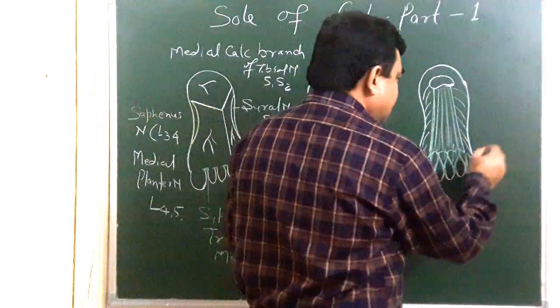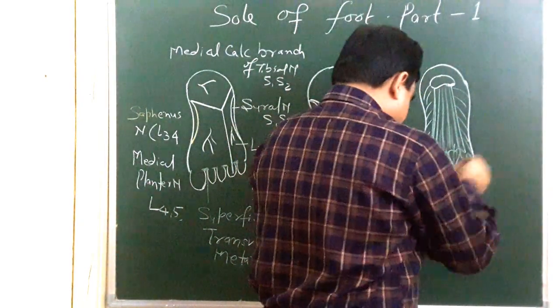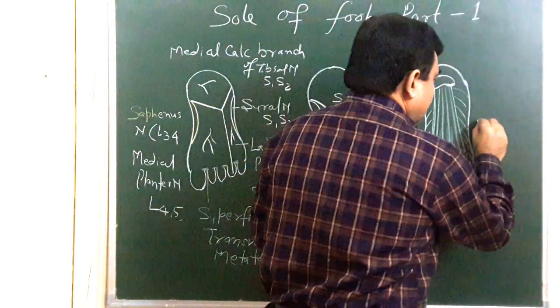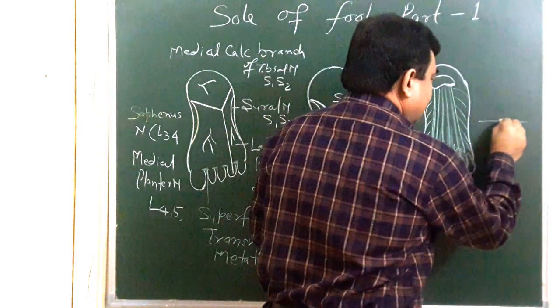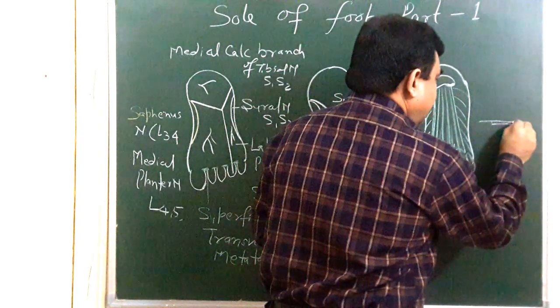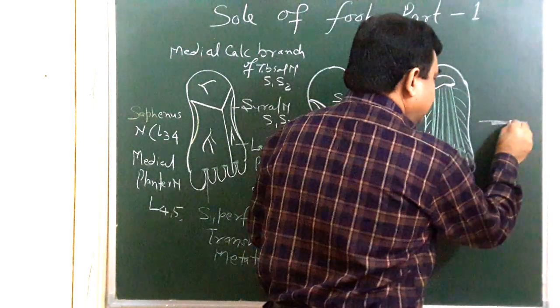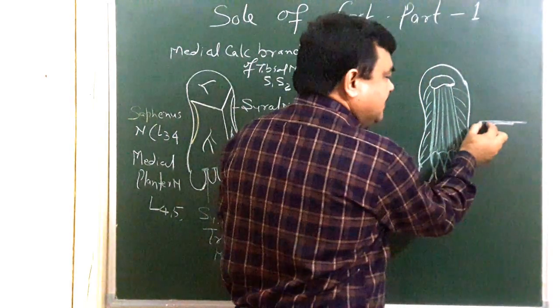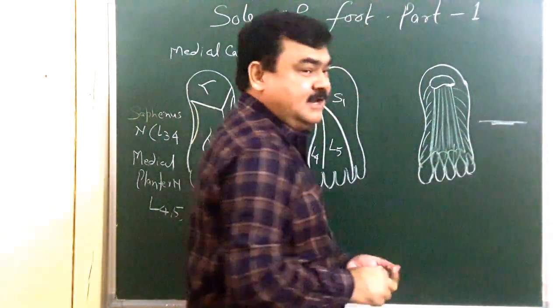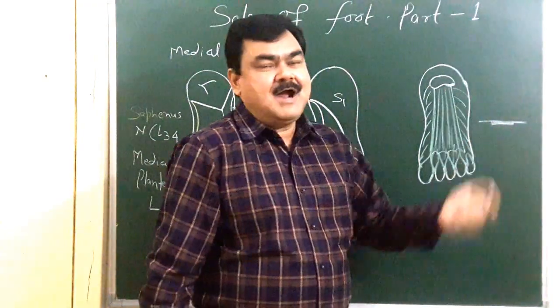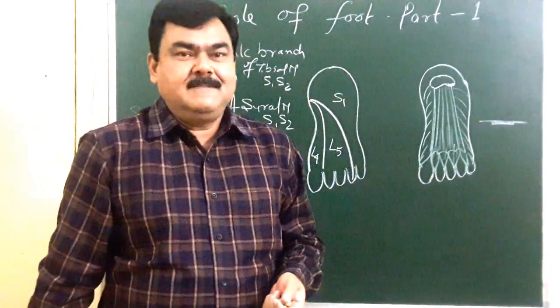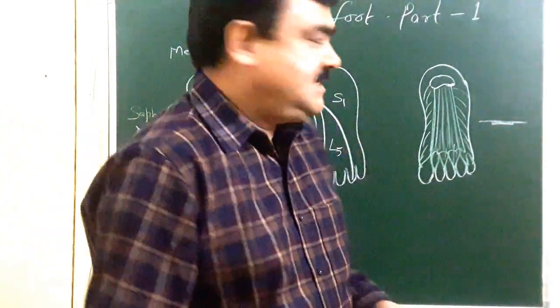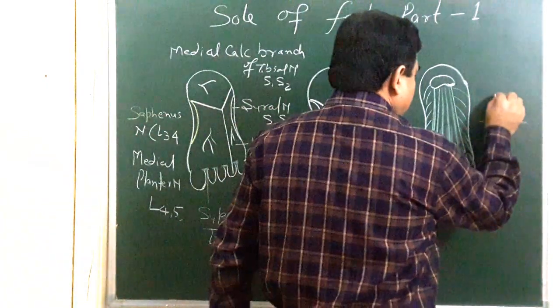If you cut a transverse section on this level, you will find like this. This is central part. This central part is thick. This medial part is thin. Lateral part is thin. This central thickened part is known as plantar aponeurosis.